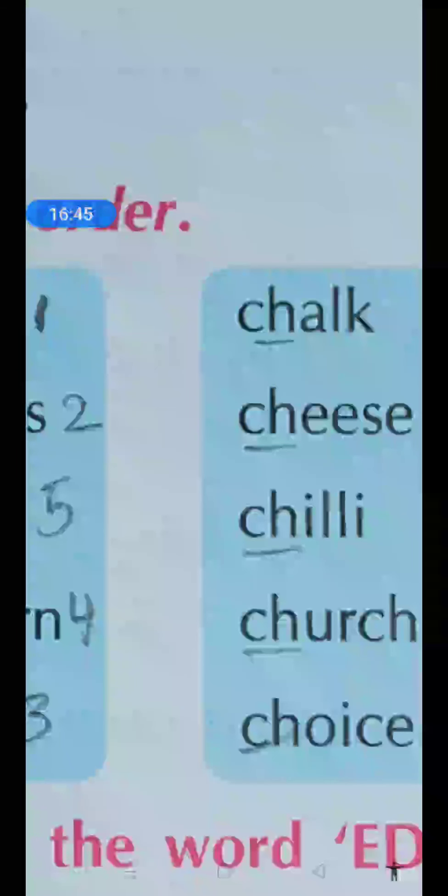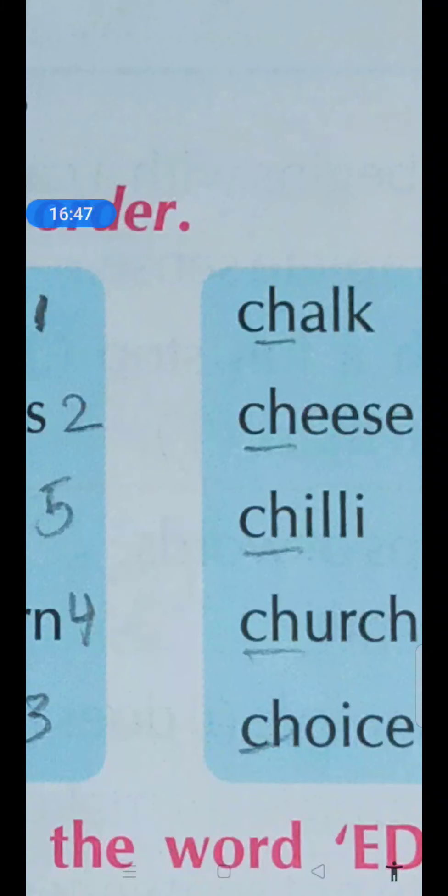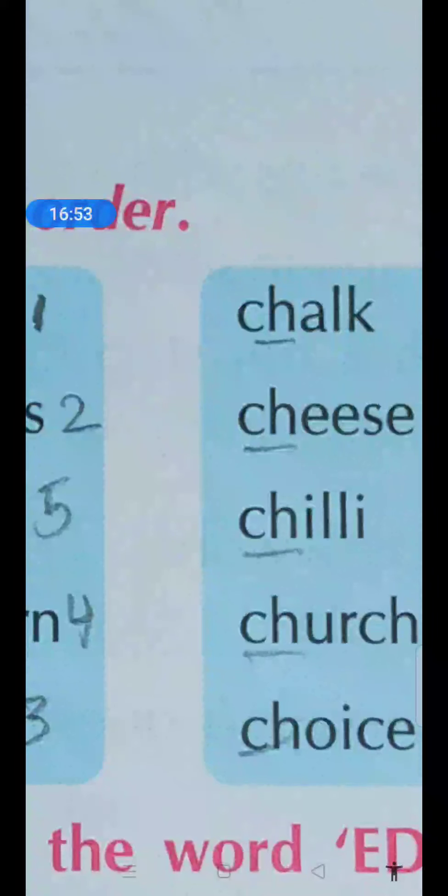So chalk A, cheese E, chili I, church U, choice O. So first of all we'll take A - chalk. Then B, C, D, E - cheese.